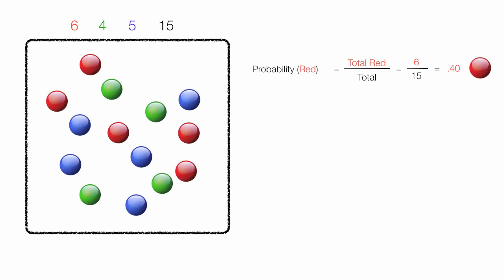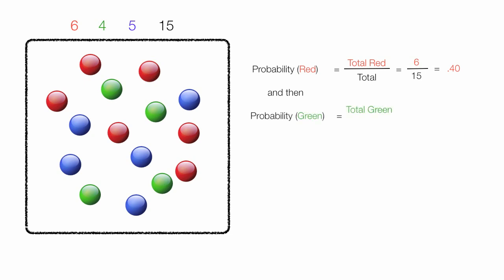That's the probability of picking a red marble, and now I put it back and replace it. Then what's the probability of picking a green marble? That is equal to four out of 15, which is equal to 0.27. That's the probability of picking a green marble.